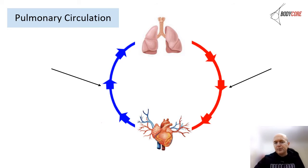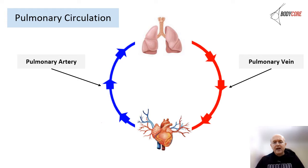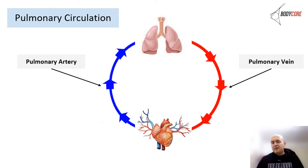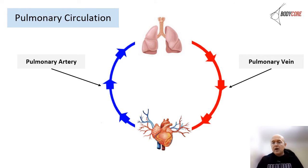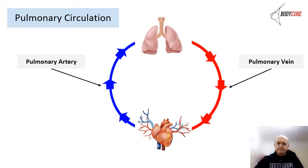There are two parts to the circulation system: pulmonary circulation and systemic circulation. In pulmonary circulation, blood goes into the pulmonary artery from the heart — this is actually deoxygenated blood. While most arteries carry oxygenated blood, the pulmonary artery is an exception: it takes deoxygenated blood to the lungs for reoxygenation. The pulmonary vein then takes oxygenated blood back to the heart, and it's put out through the aorta to the rest of the body.